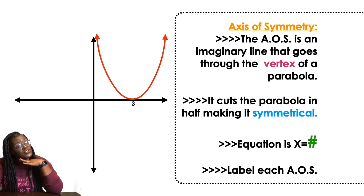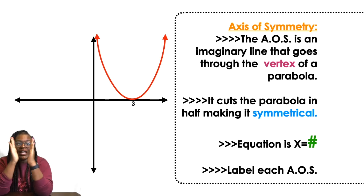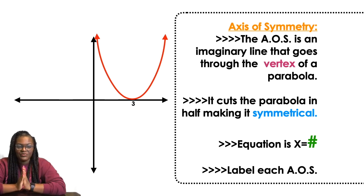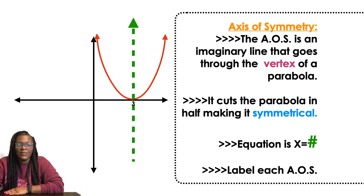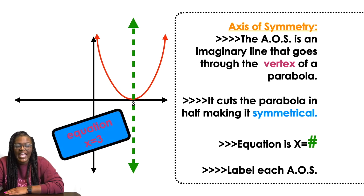And the equation of an axis of symmetry is always x equals whatever number it's sitting at on the x-axis. I cannot say that enough. So in this case, because that vertex is sitting at 3, I'm gonna label my imaginary axis of symmetry and it goes through 3. So I say that the equation is x equals 3.